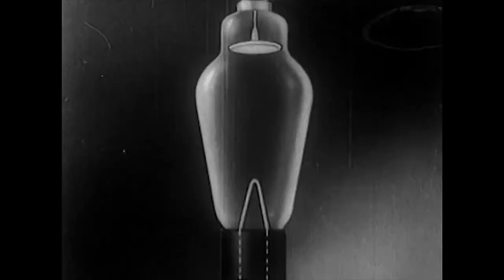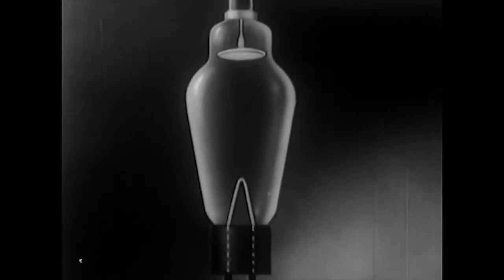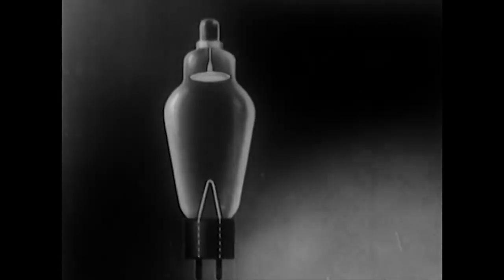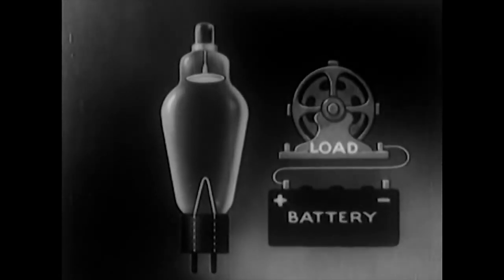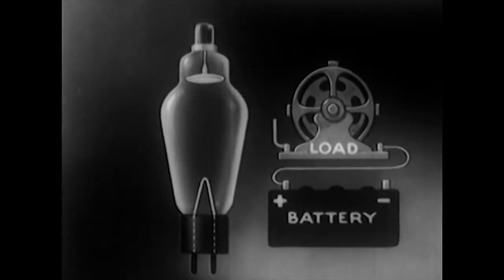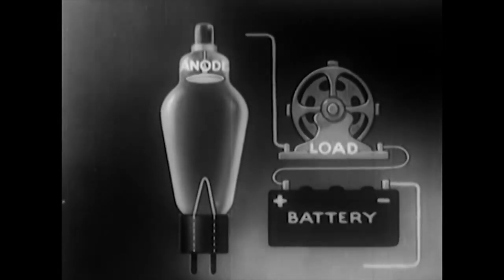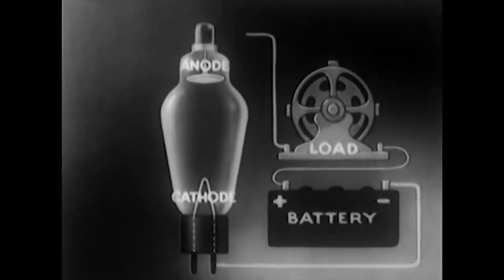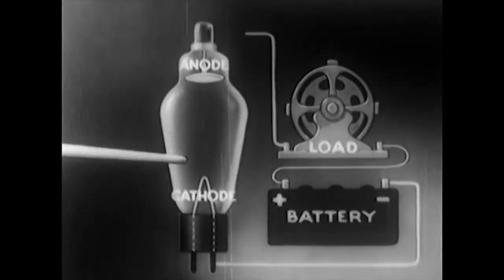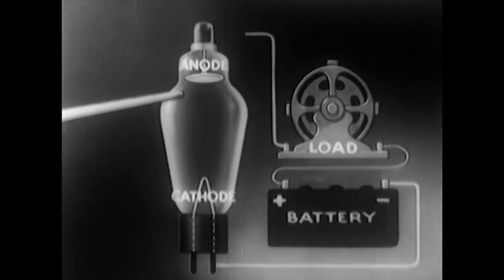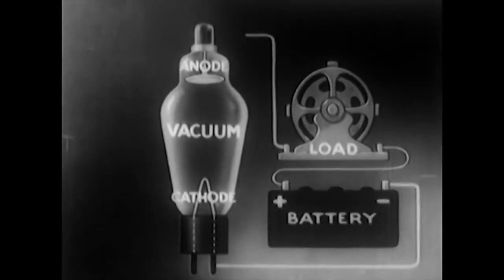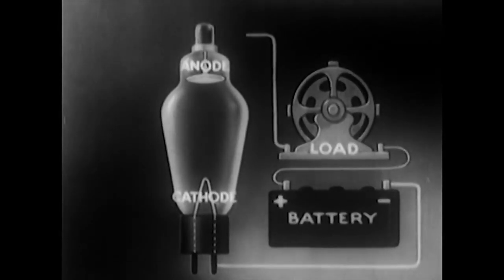This is a diode, the typical two-element electronic tube. In fundamental operation it presents an ordinary single pole switch — a switch that can connect this battery and its motor load. One power lead comes to the anode, the other lead goes to the cathode. When this switch is open, the contacts are insulated from each other by a vacuum, or by some inert gas inserted into an evacuated tube under low pressure.